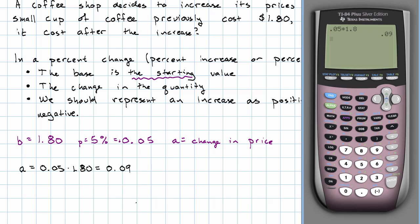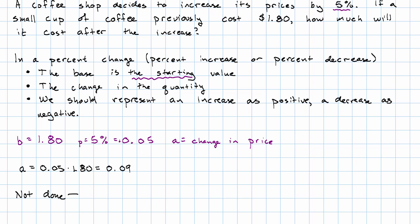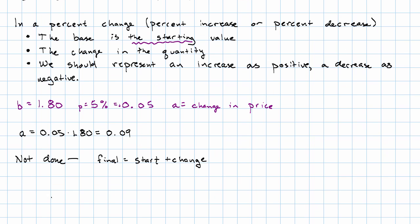Now, I'm not done with the question though. I'm asked to find the final price. So I'm going to use final is start plus change. So in this problem, my final price is $1.80 plus the 9 cent increase is $1.89. So after the increase, it costs $1.89.